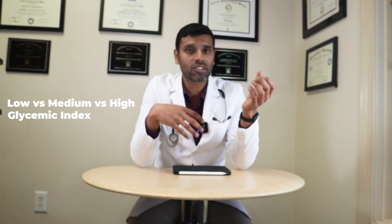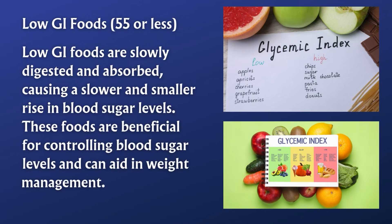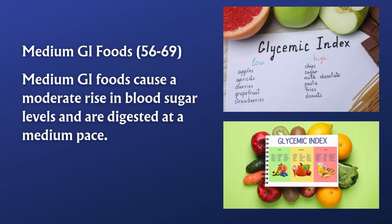We categorize foods as low glycemic index, medium glycemic index, and high glycemic index. If a food spikes blood sugar similarly to glucose it scores around 90, but if it causes a much smaller spike it scores around 20 or 30. Low glycemic index foods score 55 or less, medium glycemic index foods score between 55 and 69, and high glycemic index foods score 70 and above.